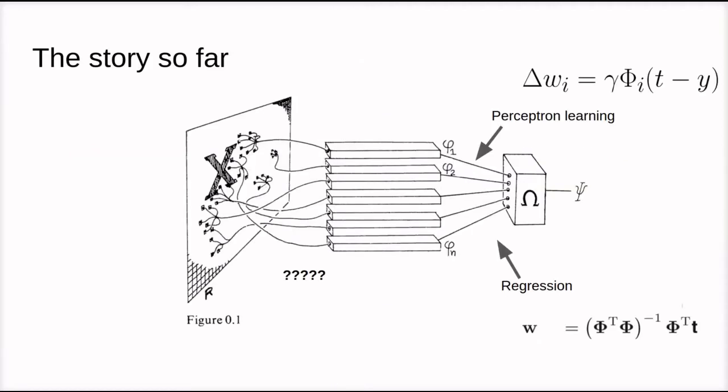In the previous lecture, we discussed the perceptron and regression learning rules, and these are methods for learning to approximate functions. Although when data becomes complex, we might need to extract useful features from the data through the use of these phi functions.